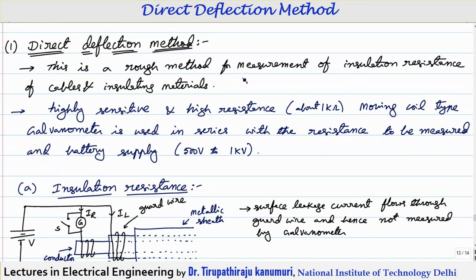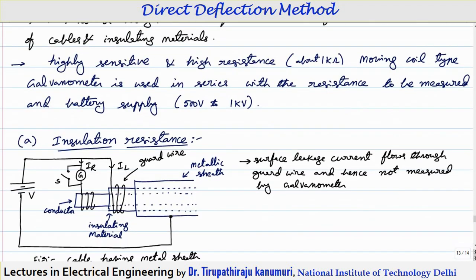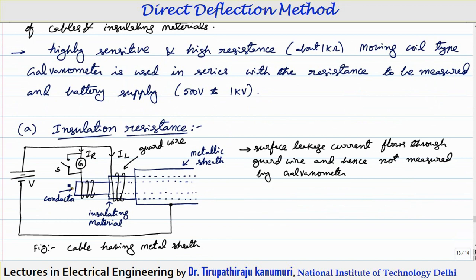This is a rough method used for measurement of insulation resistance of cables as well as insulating materials. Because the value of the resistance is very high, for a given voltage — let's assume applying about 500 volts and resistance equal to 1 mega ohm — voltage divided by resistance means the current will be very less. In order to sense that small value of current, whichever galvanometer you are using should have very high sensitivity.